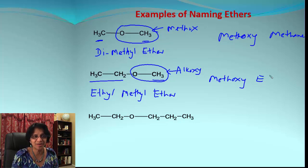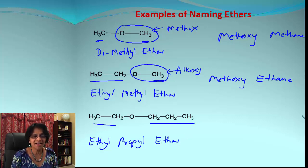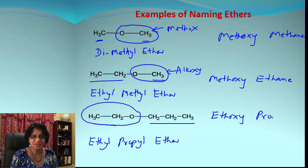How about the next one? Here we got two alkyl groups - one is ethyl, one is propyl. So by the common method it will be ethyl propyl ether. If you have to find out which one is going to be alkoxy, the one which is smaller - the two carbon atom chain is smaller than three carbon atoms - so this one will be alkoxy. In this case, this is ethane, so it will be ethoxy, and the parent chain has three carbon atoms so it will be propane.